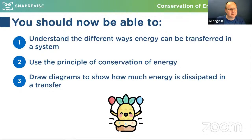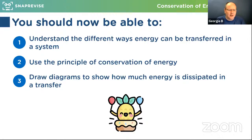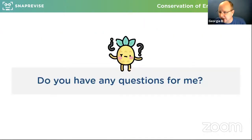I'm going to move past that question and just summarize now as we're right at the end of our time. You should now be able to understand different ways energy can be transferred in a system — a system being one object or a group of objects interacting. Number two: the principle of energy conservation — energy can be neither created nor destroyed, just transformed from one form to another. And lastly: to be able to look at a system and label where energy is being dissipated.